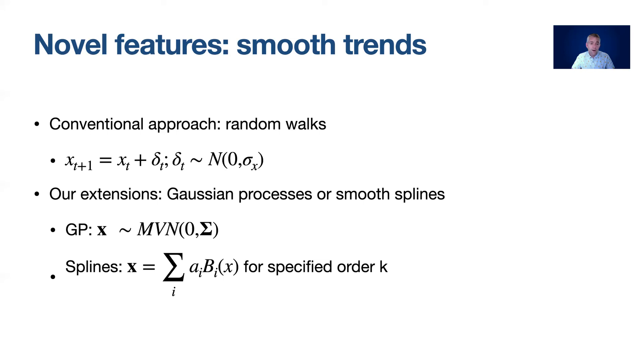Last I wanted to talk about relaxing the assumption that trends are modeled as random walks and instead let them be modeled with smooth functions. We've adopted two different ways to do this in the bayesDFA package. The first is to model them as Gaussian processes and the second is to model them as smooth splines, specifically B-splines.